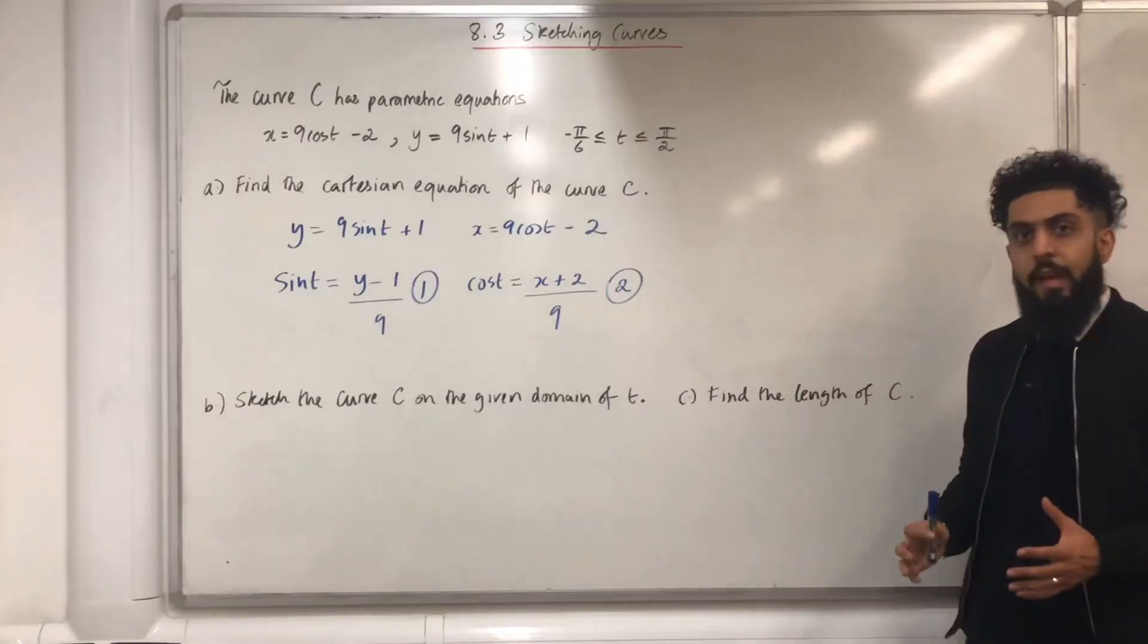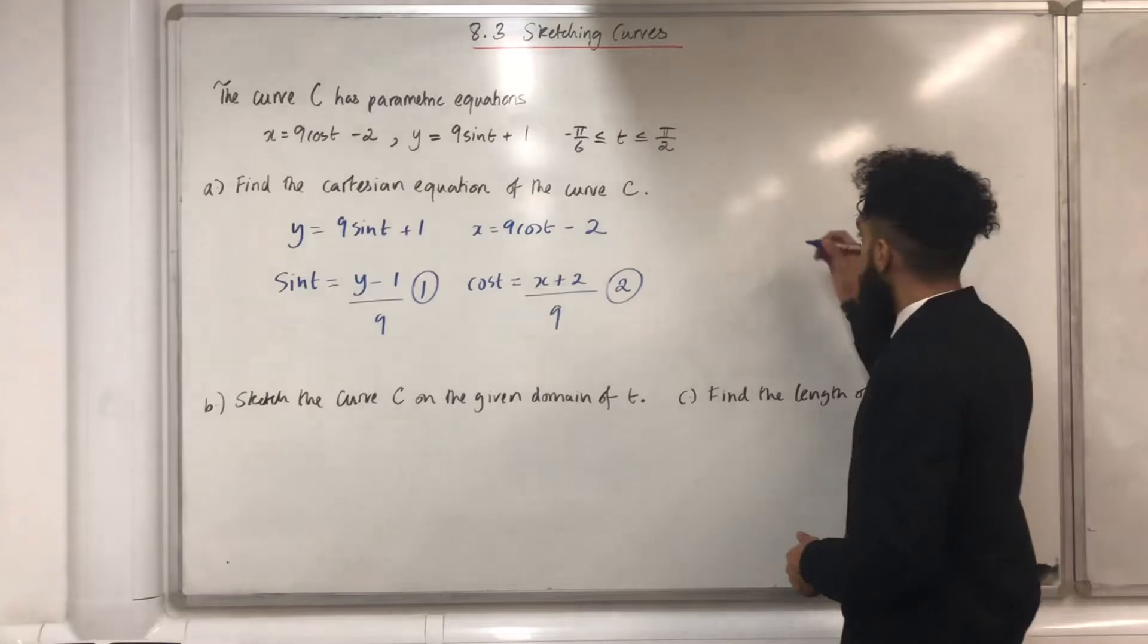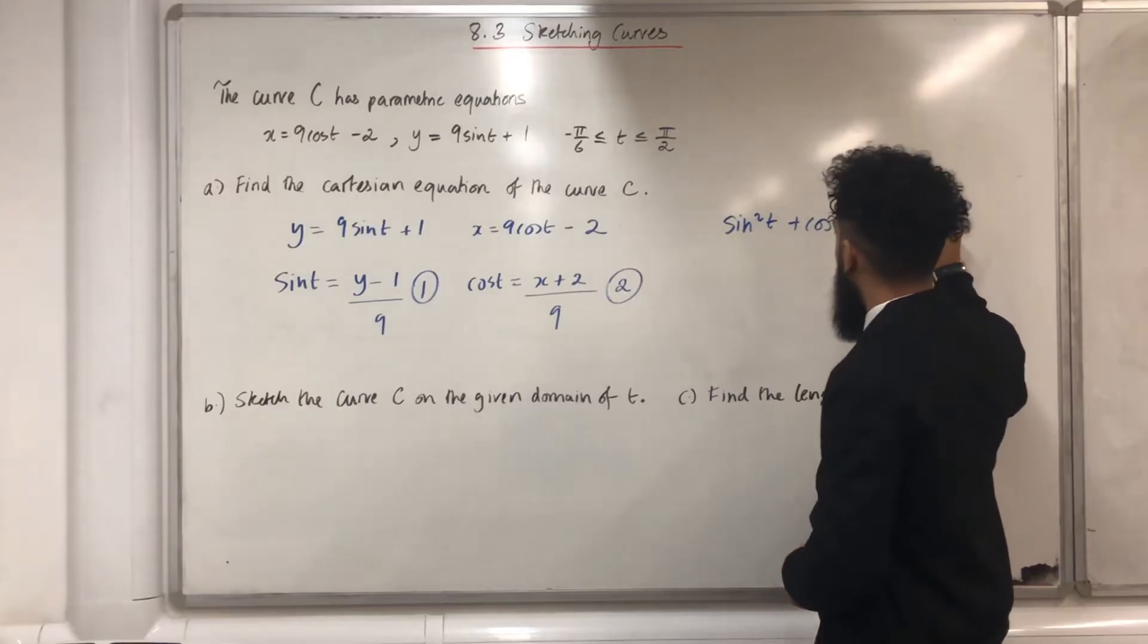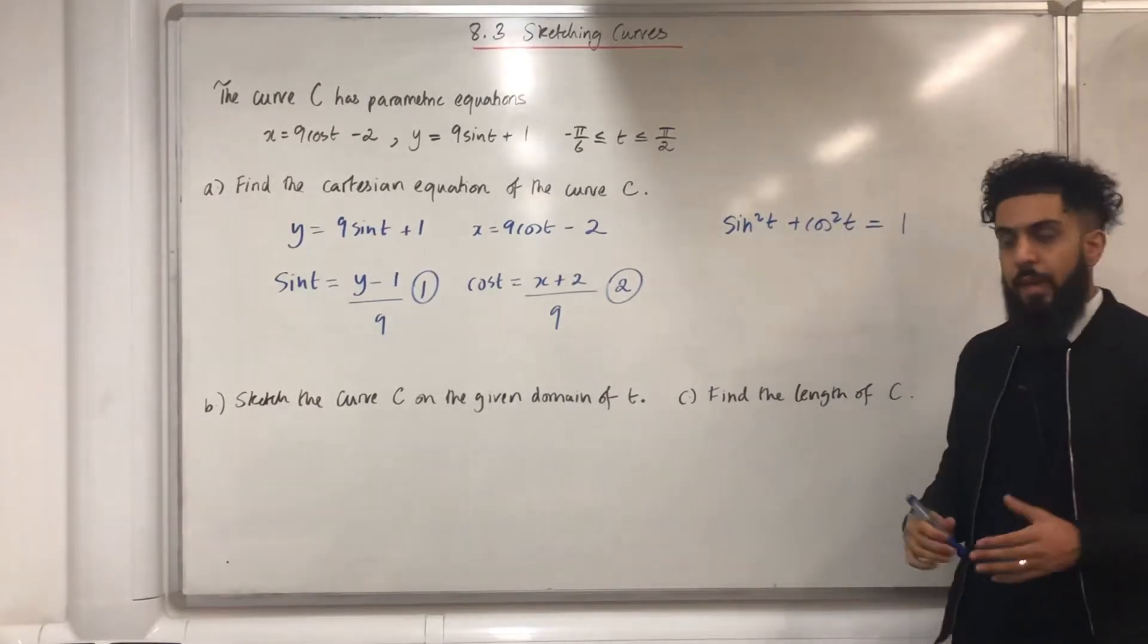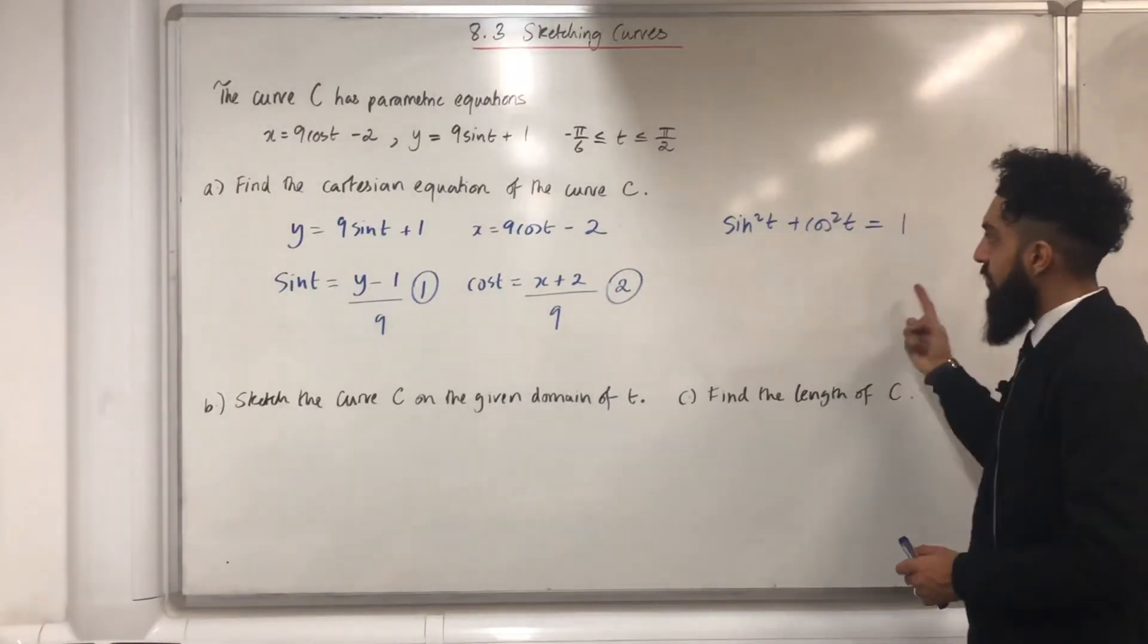The third step is to write down the identity sin squared t plus cos squared t is equal to 1. The fourth step is to substitute equation 1 and equation 2 into this beautiful identity.